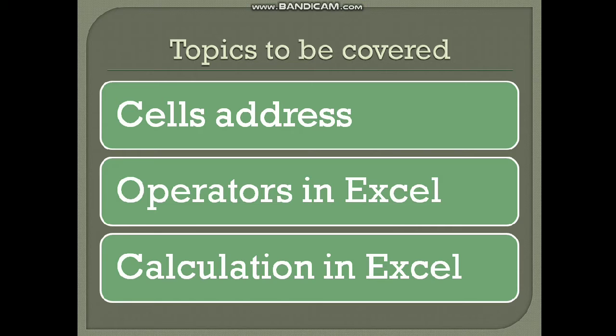Cell address is basically required to distinguish between two different cells. It is a very simple thing to understand. If I ask you where you are, then you can simply state your address, and then I will know where your house is.